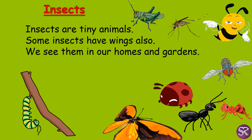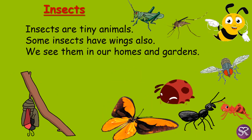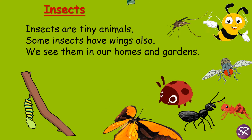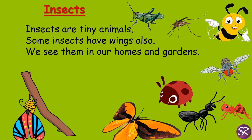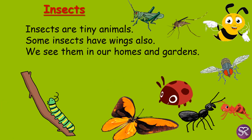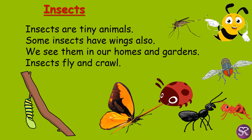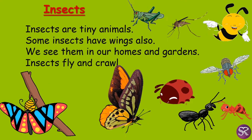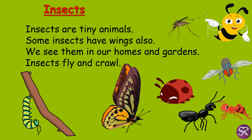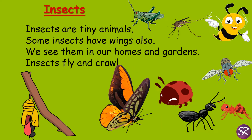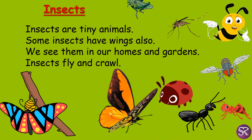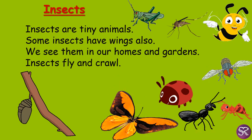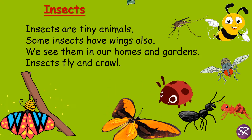We can see them in our homes. And also when we go out into the park or a garden, we can see all these different insects. Insects fly and crawl. The insects who have wings, they can fly. And the other insects, they crawl like a small baby. They cannot walk or run like us. They just crawl like small babies. Yes, insects fly and crawl.